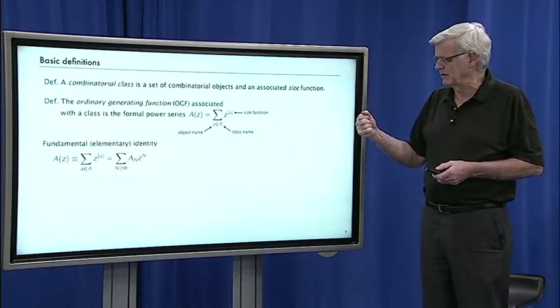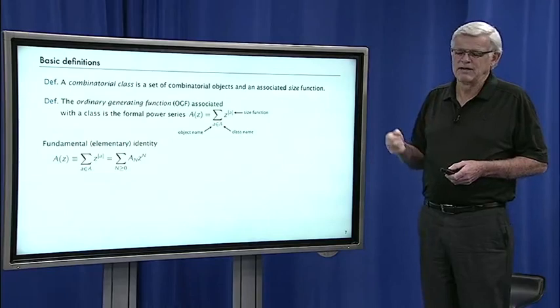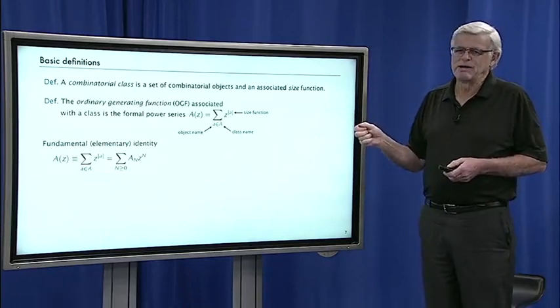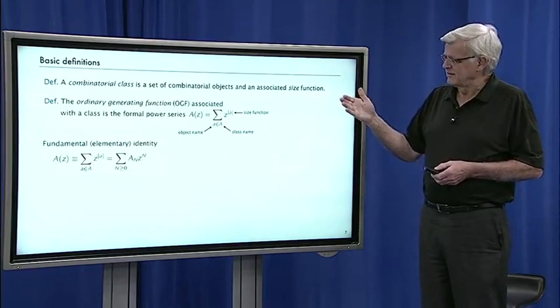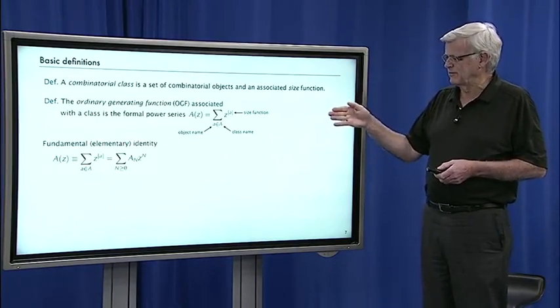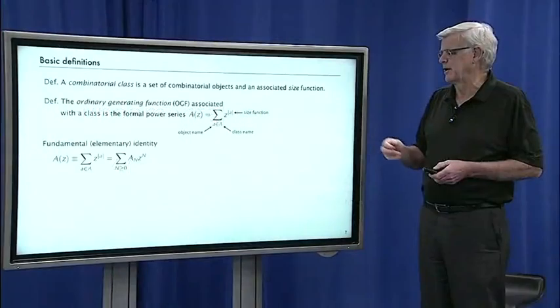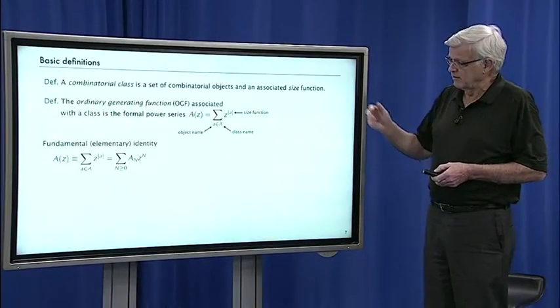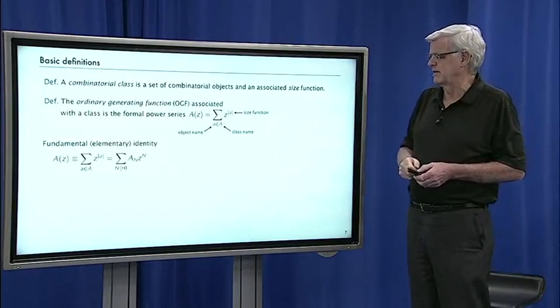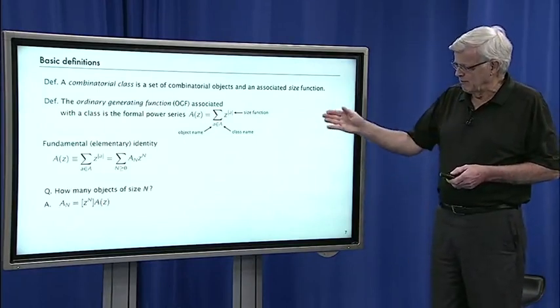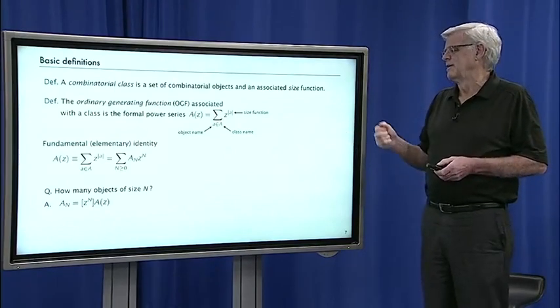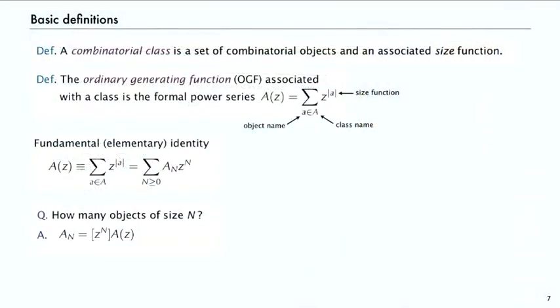Now, there's a very elementary identity that's fundamental to all the manipulations of the symbolic method. This generating function where we look at all the objects, raise z to the size of the object, equals summing for all n, the number of objects of size n times z to the n. Because if there's A_N objects of size n, then there's A_N terms on that left-hand side, one for each object of size n. Collect them together, you get A_N z to the n. That's the fundamental identity. Our goal is to find good estimates of this value A_N, which we refer to with the notation [z^n], the coefficient of z^n in A(z).